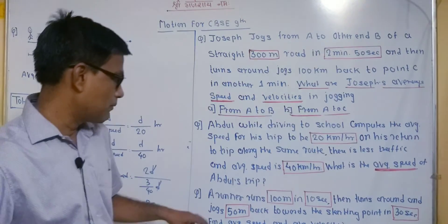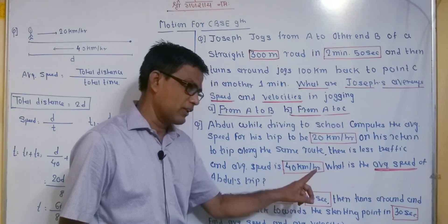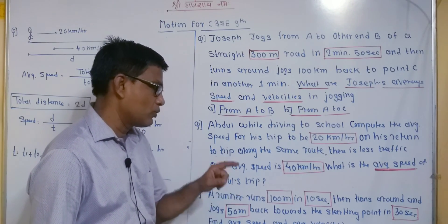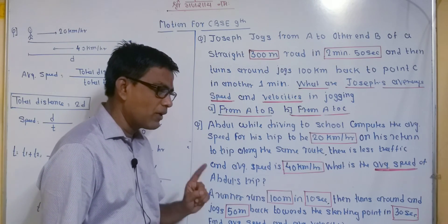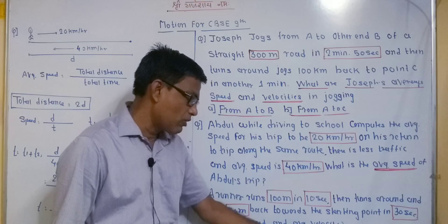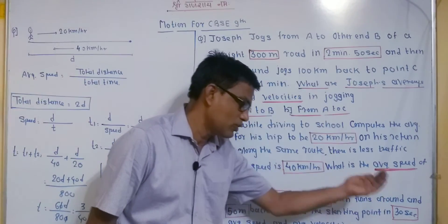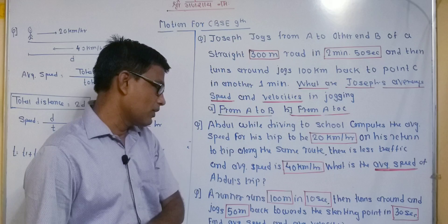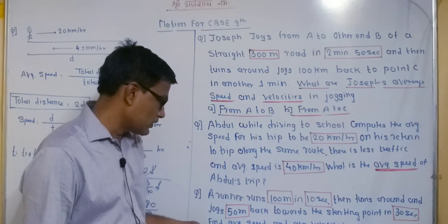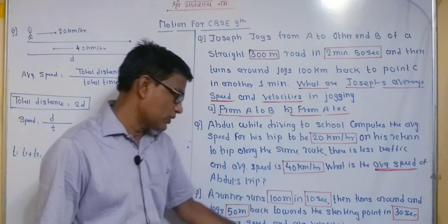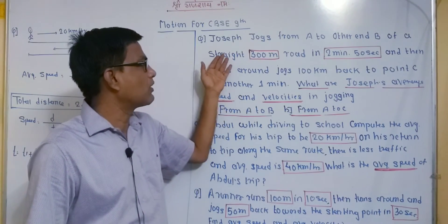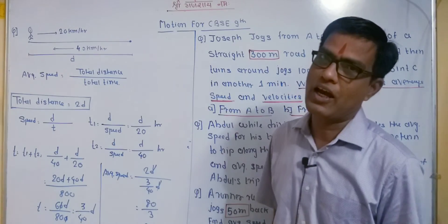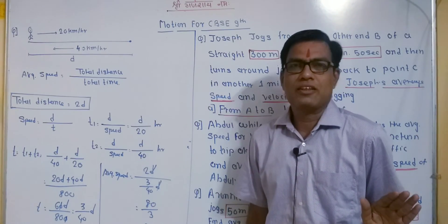The next example for homework: a runner runs 100 meters in 10 seconds, then turns around and jogs 50 meters back toward the starting point, taking 30 seconds to return. Find the average speed and average velocity. Put your answer in the comments box. Watch every video and keep practicing.